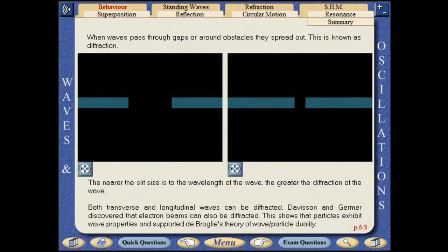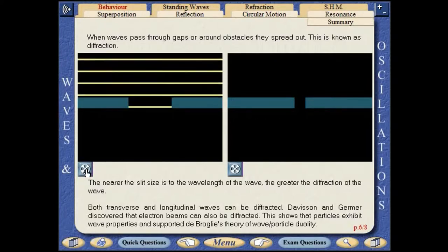When waves pass through gaps or around obstacles, they spread out. This is known as diffraction. The nearer the slit size is to the wavelength of the wave, the greater the diffraction of the wave.